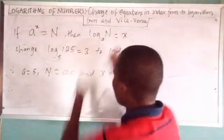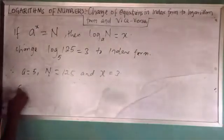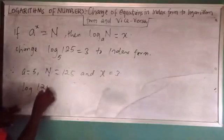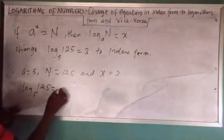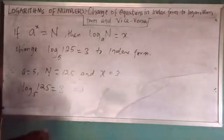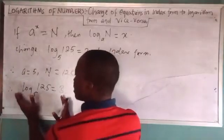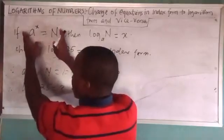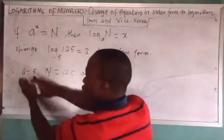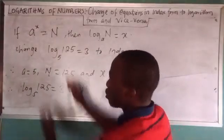So now to take this logarithm equation to index form, what are you going to do? Just come to this equation. Log of 125 base 5 equals 3 implies, because we want to write this one in index form, we come to this and we have already known our a, N and x.